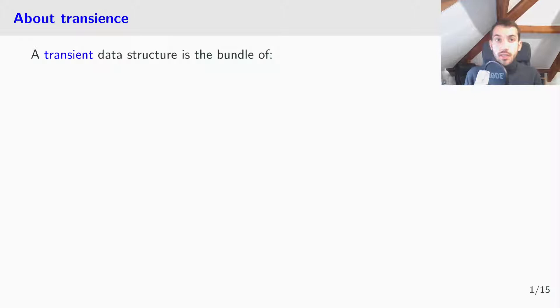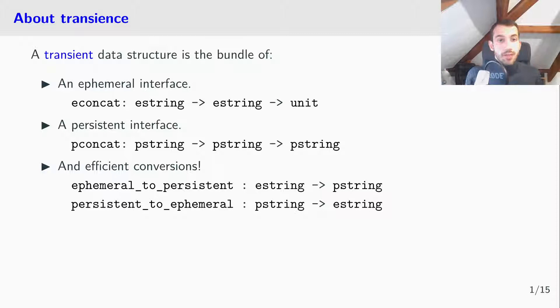A transient data structure is a bundle of an ephemeral interface, for example you can concat two ephemeral strings by appending the second one in the first one, a persistent interface, for example you can concat two persistent strings by producing a new persistent string without modifying the two arguments, and efficient conversions between the two, so you can go from ephemeral to persistent and persistent to ephemeral in less than linear time.